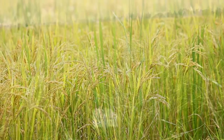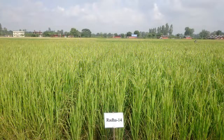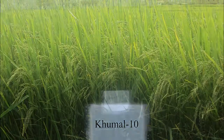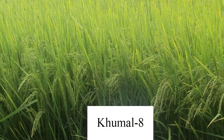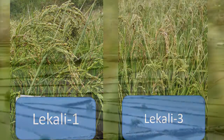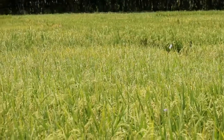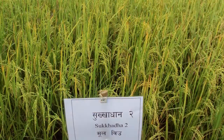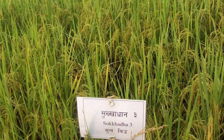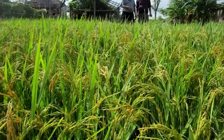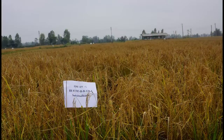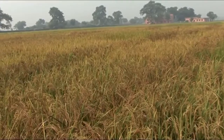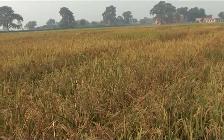Some examples are Sugandit Dhan 1, Radha 14, Kumal 10, Kumal 4, Kumal 8, Hardinath 1, Lekali Dhan 1 and 3, Chandan Nath 3, Ram Dhan, Sabitri 3, Sawa Masuri Sub 1, Sukadhan 1, Sukadhan 2, Sukadhan 3, Sukadhan 4, Sukadhan 5, and Sukadhan 6, and many more, which are grown in different climatic conditions.